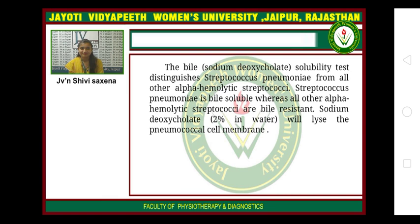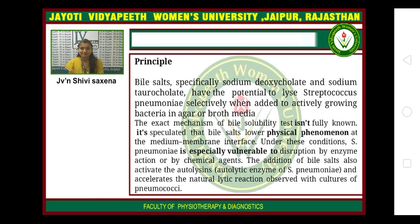Streptococcus pneumoniae is bile soluble, whereas all other alpha-hemolytic streptococci are bile resistant. Sodium deoxycholate 2% in water will lyse the pneumococcal cell membrane. The principal bile salts, specifically sodium deoxycholate and sodium taurocholate, have the potential to lyse Streptococcus pneumoniae selectively when added to actively growing bacteria in agar or broth medium.